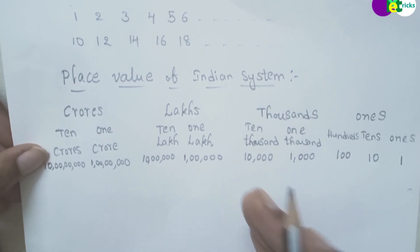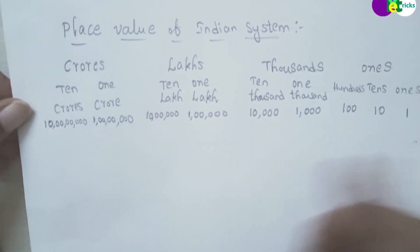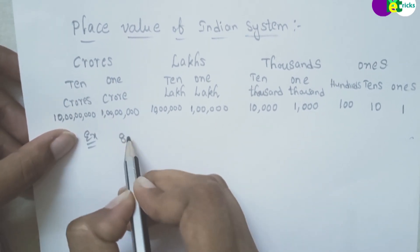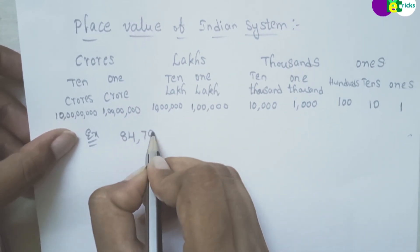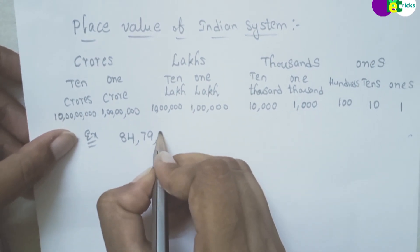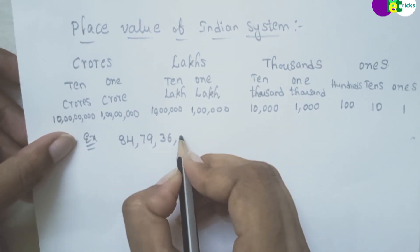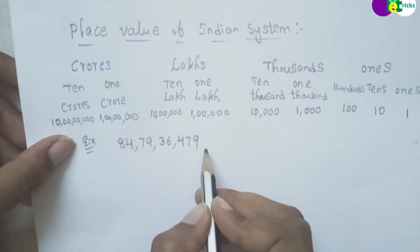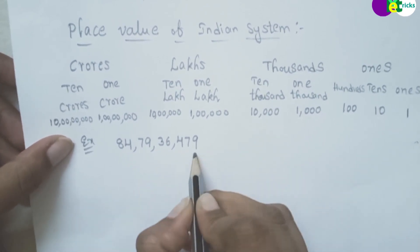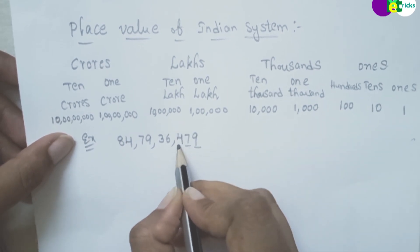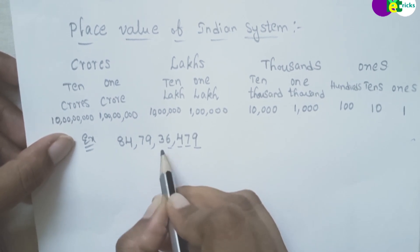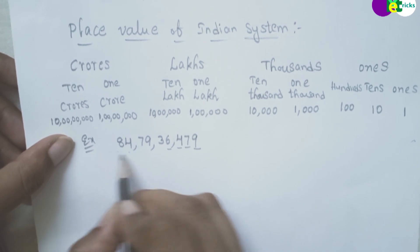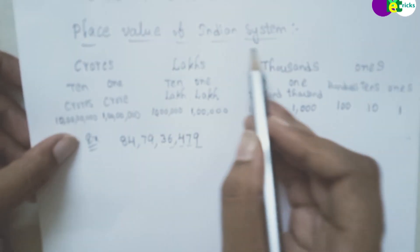For example, let's take the number 84 crores 79 lakhs 36,479. If you look at this number in the Indian system, the place values are: ones place, tens place, hundreds place, thousands place, ten thousands place, one lakh, ten lakhs, one crore, and ten crores. These are the place values in the Indian system number chart.